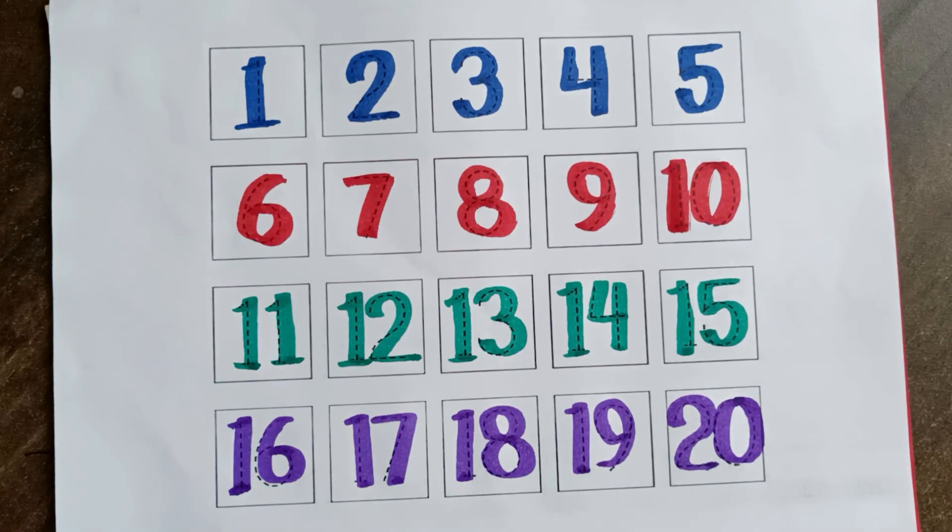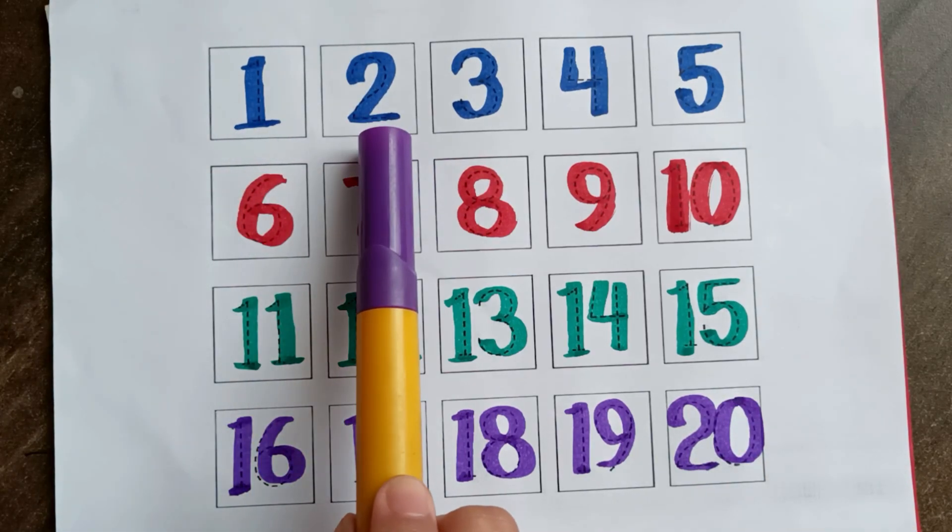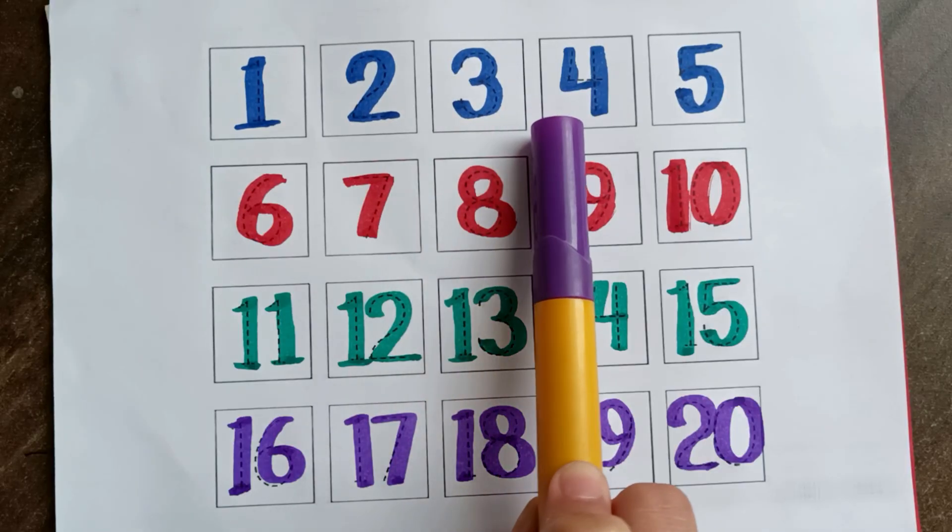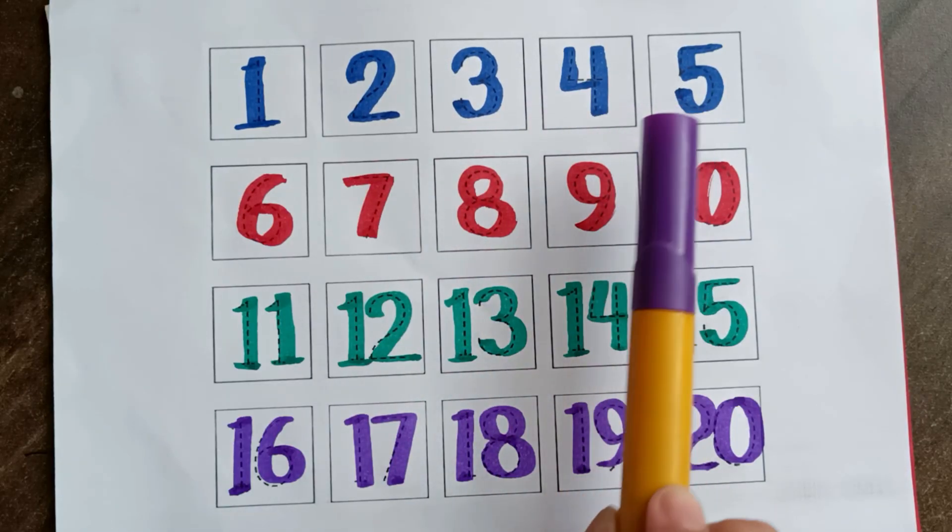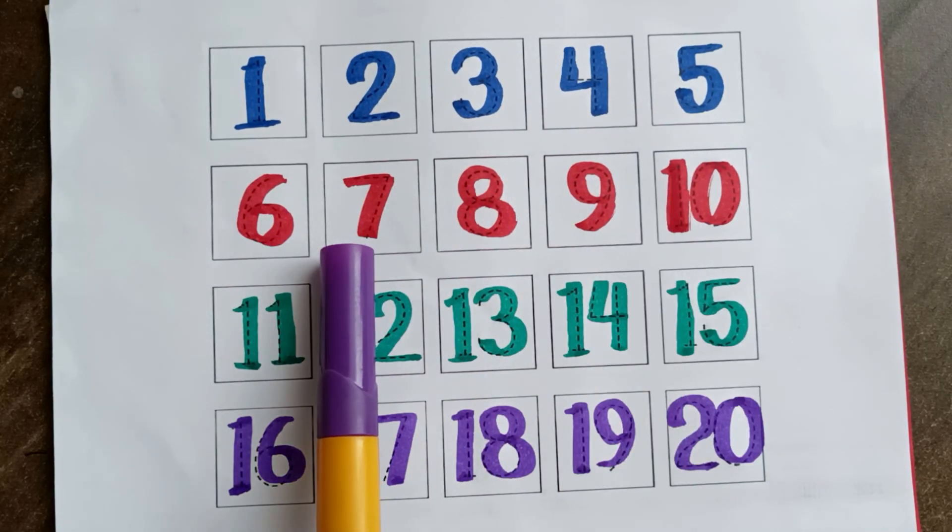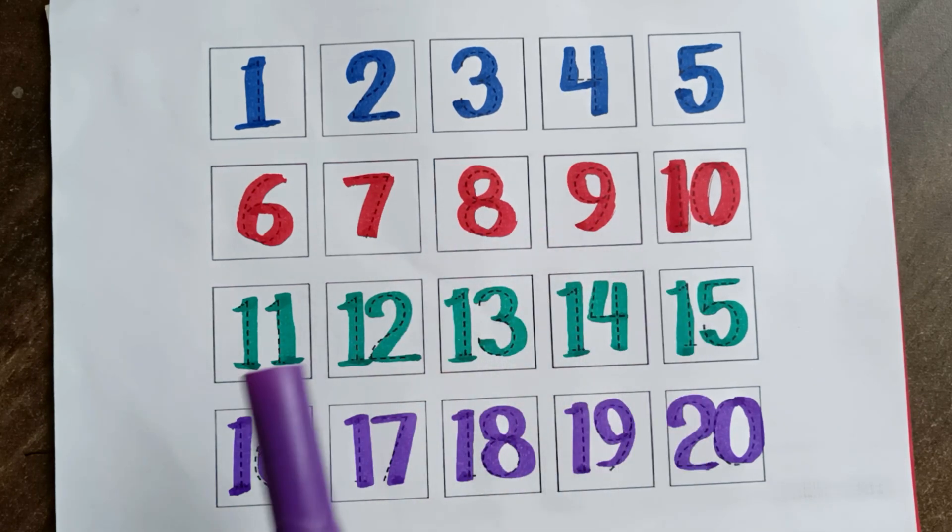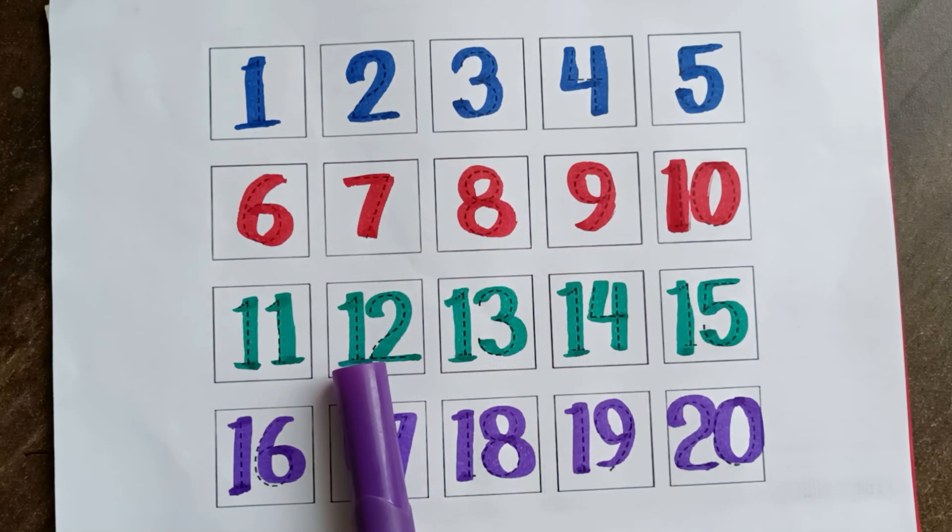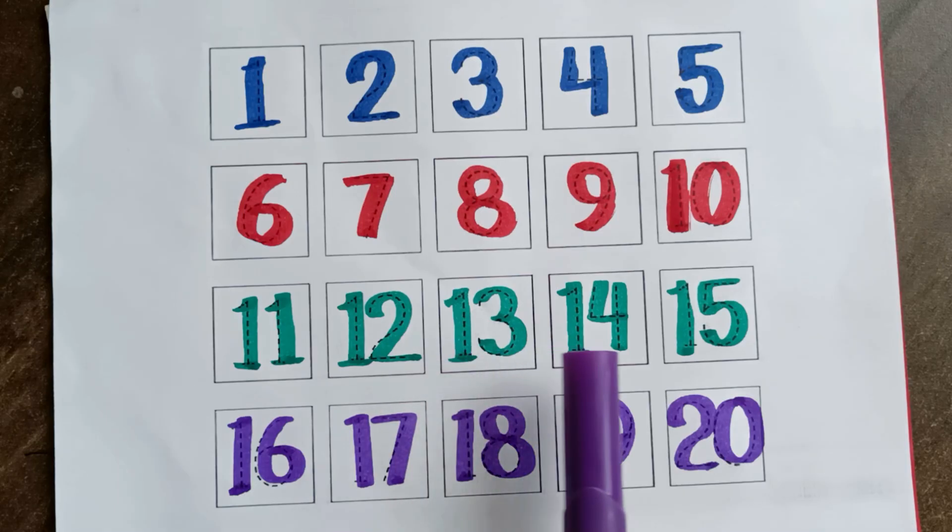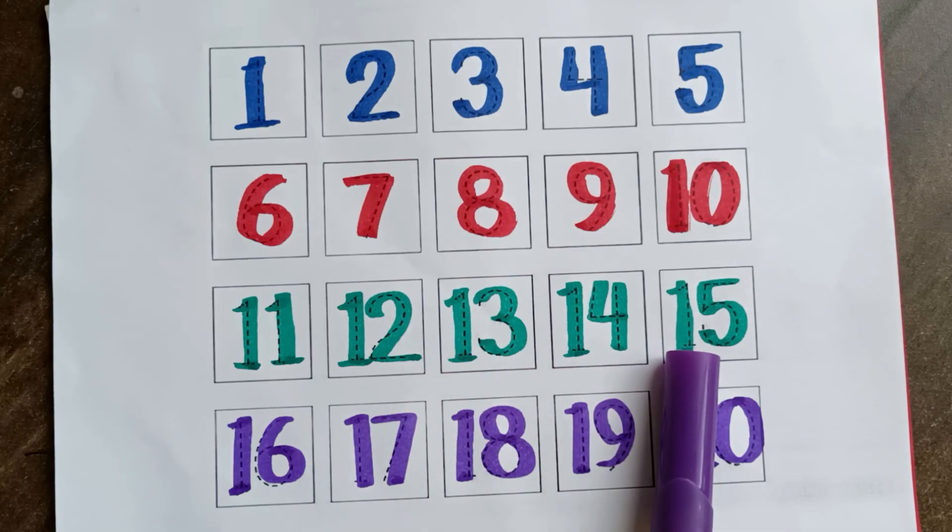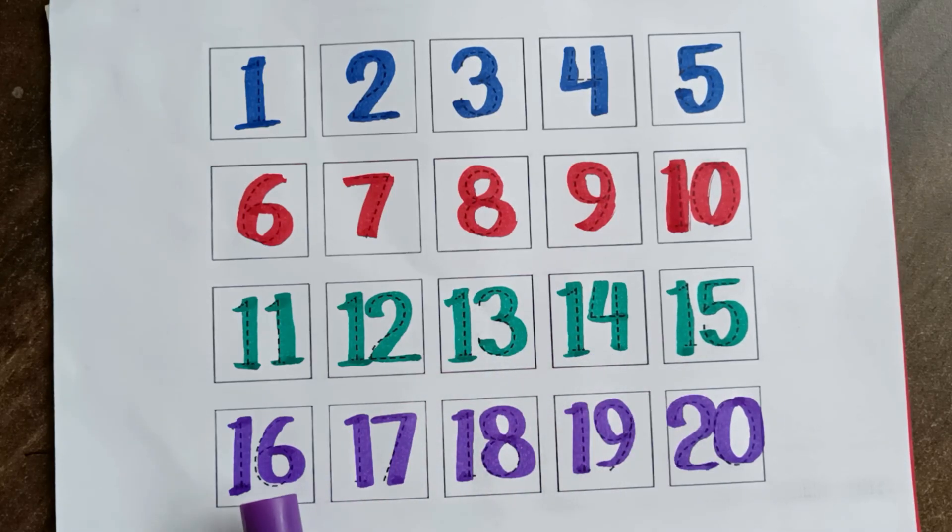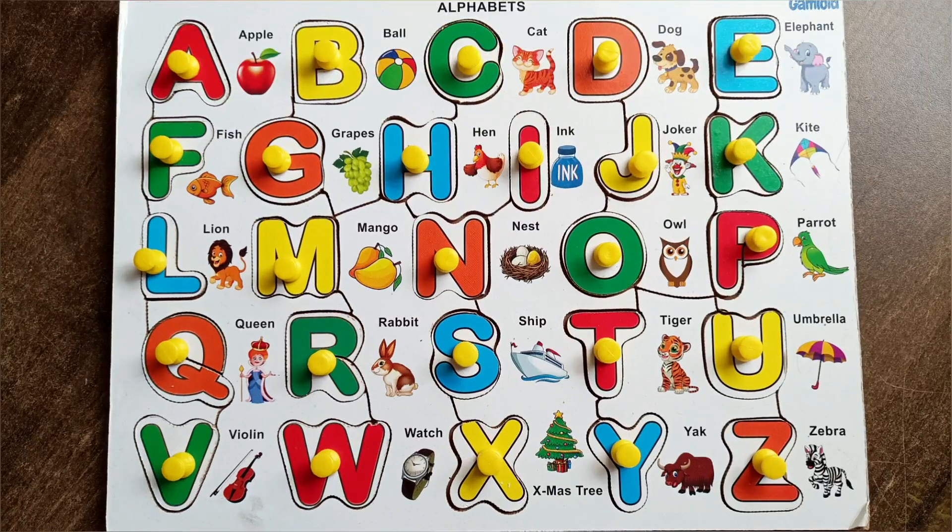One, two, three, four, five, six, seven, eight, nine, ten, eleven, twelve, thirteen, fourteen, fifteen, sixteen, seventeen, eighteen, nineteen, and twenty. Thank you.